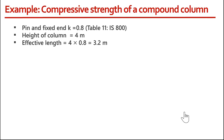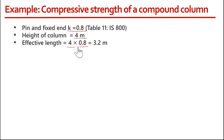This column is pinned at one end and fixed at the other end. The K value used to find the effective length can be found from Table 11 of the code. In this case, K equals 0.8. The length of the column is 4 meters, so the effective length KL equals 0.8 × 4 = 3.2 meters.